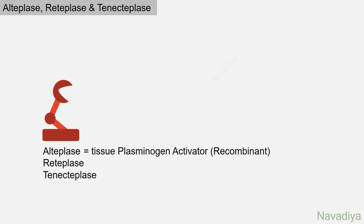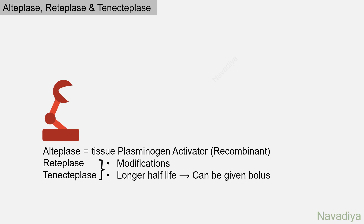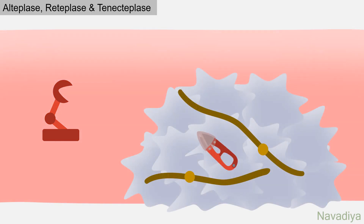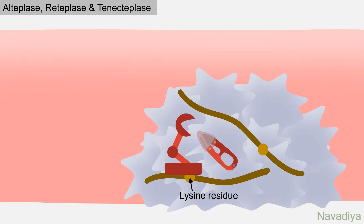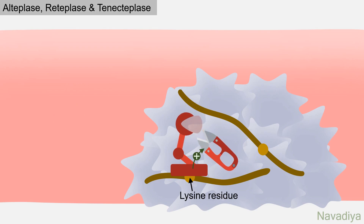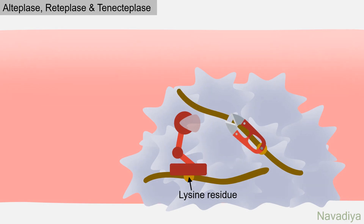Next: alteplase, reteplase, and tenecteplase. Alteplase is basically tissue plasminogen activator produced by recombinant DNA technology. Reteplase and tenecteplase are modified versions of alteplase with a longer half-life, so they can be given as a bolus, in contrast to other drugs which require continuous infusion. In blood, they have very low affinity for plasminogen. However, in the clot, they bind with lysine residues on fibrin, after which they activate plasminogen more rapidly, leading to fibrinolysis and clot dissolution.